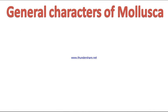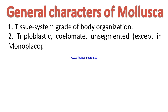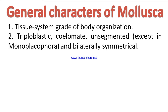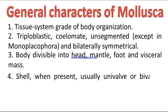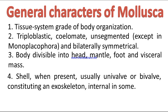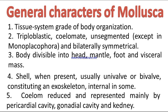General characters of Mollusca: Number one — tissue system grade of body organization. Number two — triploblastic coelomate, unsegmented except in Monoplacophora, and bilaterally symmetrical. Number three — body divisible into head, mantle, foot, and visceral mass. Number four — shell, when present, usually univalve or bivalve, constituting an exoskeleton, internal in some. Number five — coelom reduced, represented mainly by pericardial cavity, gonadial cavity, and kidney.